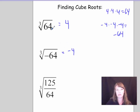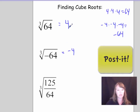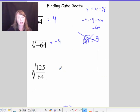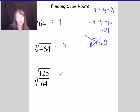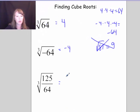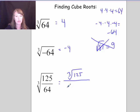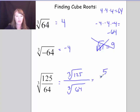If you want to find the cube root of a perfect cube fraction, you simply apply the cube root to both the numerator and the denominator separately. For example, the cube root of 125 over 64 is going to be the cube root of 125 over the cube root of 64, which equals 5 over 4.